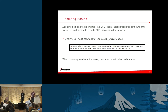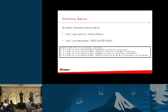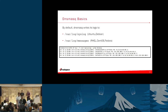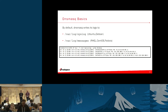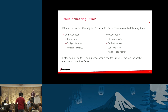When an instance sends out a lease request, dnsmasq will hand out that lease and update its active lease database in memory. By default, dnsmasq stores DHCP cycle messages in /var/log/syslog or /var/log/messages depending on your distribution. You can see the DHCP discover from the client, the DHCP offer from the server presenting an IP address, the client sending a DHCP request, and then the server acknowledging that request. If you have issues obtaining an IP, start with packet captures on a couple of different devices.